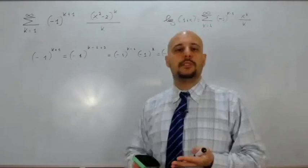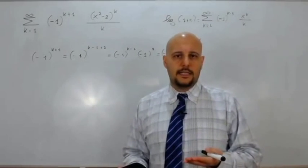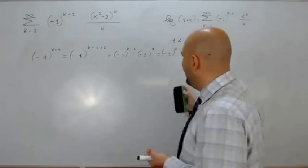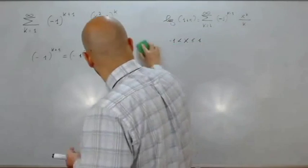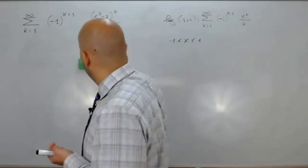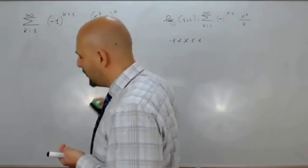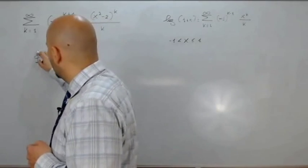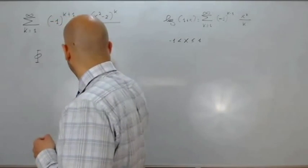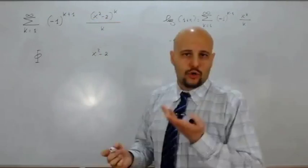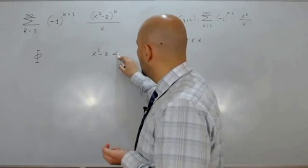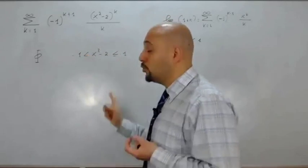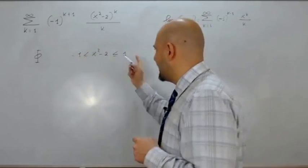Ecco perché in alcune espressioni si trova la somma al logaritmo di 1 più x sviluppata come meno 1 alla k più 1 anziché meno 1 alla k meno 1: sono evidentemente la stessa cosa. Calcoliamo ora l'insieme di convergenza puntuale, che sarà in questo caso x al quadrato meno 2 — ovvero il nostro x dell'x alla k — compreso tra meno 1 (escluso) e 1 (incluso).